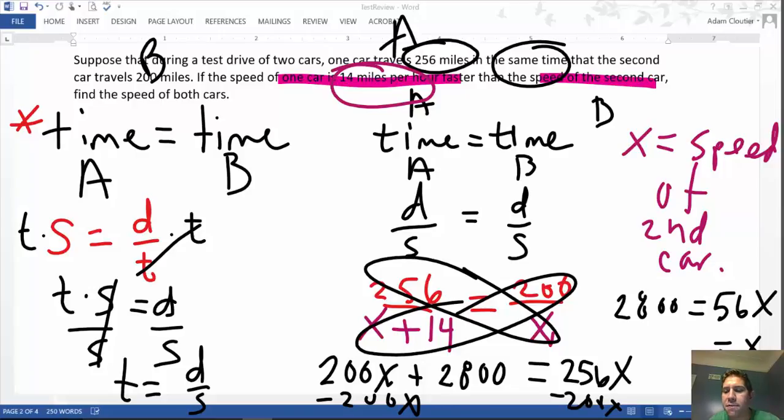I'll let you take it from there, but divide both sides by 56, and you will get the speed of the second car. Make sure you know that the directions say find the speed of both cars. So after you get X, or the speed of the second car, make sure you get the speed of the first car too.